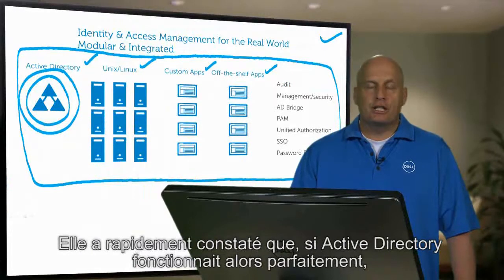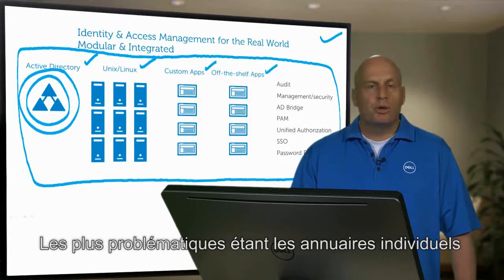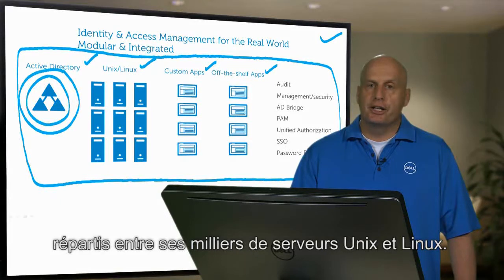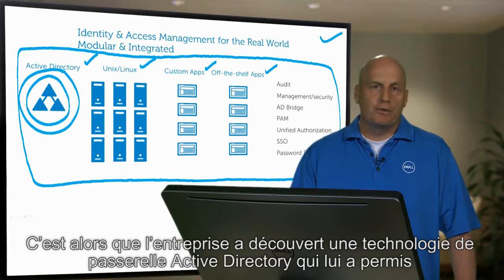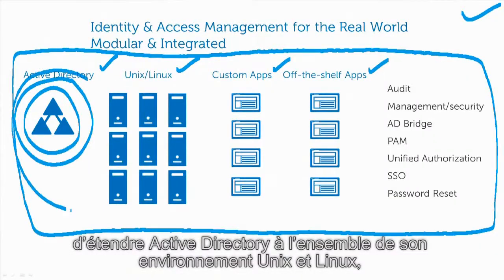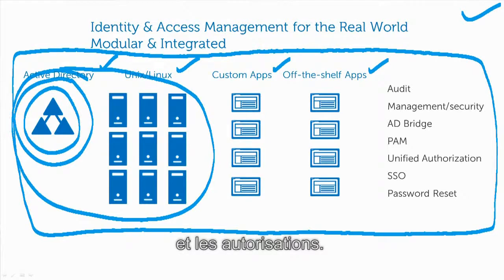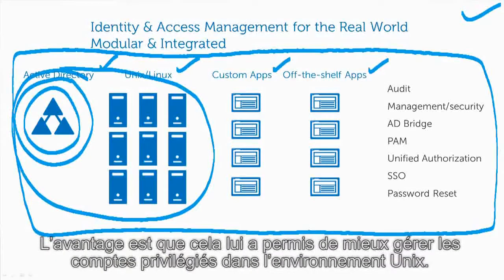They soon realized that Active Directory was working very well for them, but they had a lot of other directories that weren't. The ones causing the most problems were the individual directories across thousands of Unix and Linux servers. So they discovered a technology called an Active Directory Bridge that allows them to extend Active Directory to their entire Unix and Linux environment, functionally removing the need to manage identity, authentication, and authorization across that entire environment. That then gave them a perfect entry into privileged account management for the Unix environment.